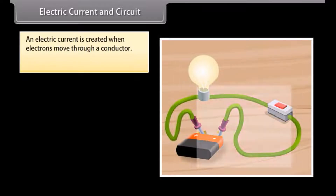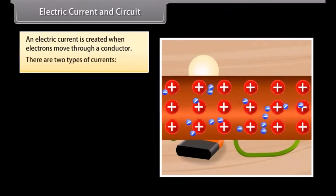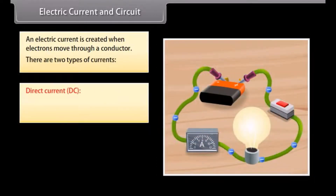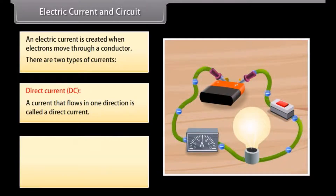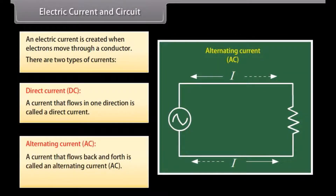An electric current is created when electrons move through a conductor. There are two types of currents: direct current (DC) — a current that flows in one direction, for example, a battery produces a direct current — and alternating current (AC), a current that flows back and forth. The symbol of electric current is I.